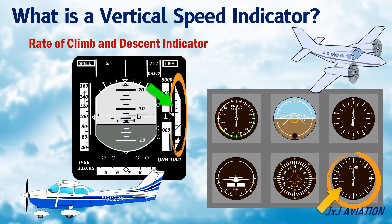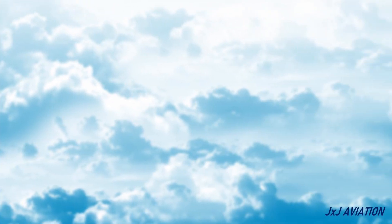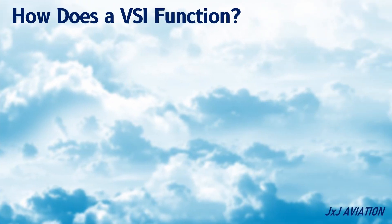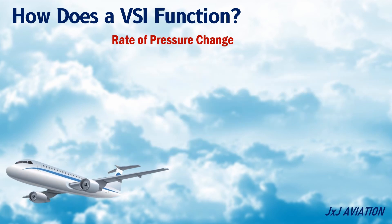First, let's look at how a conventional vertical speed indicator functions. The vertical speed indicator uses the rate of change of pressure to indicate the rate at which an aircraft is climbing or descending.